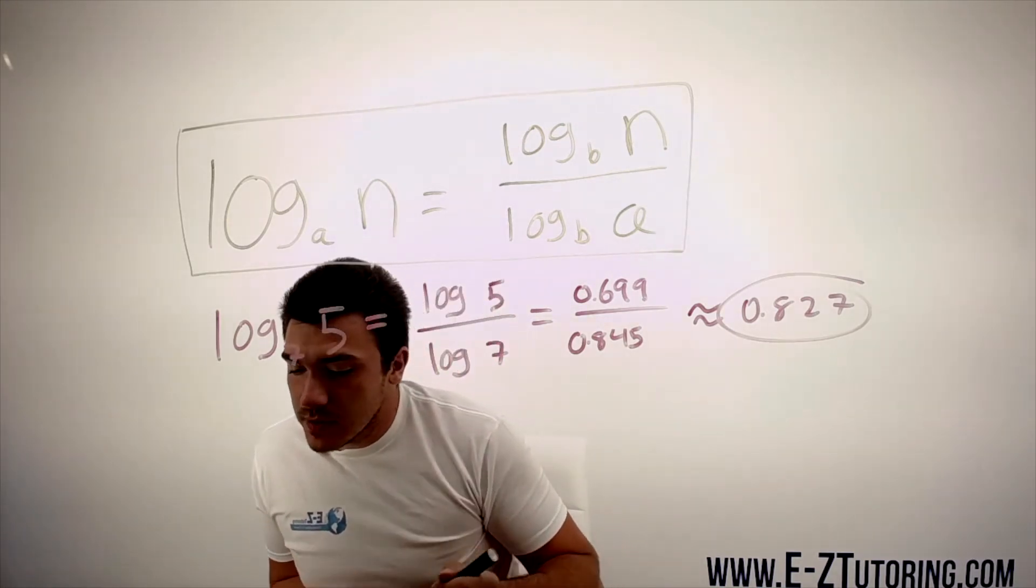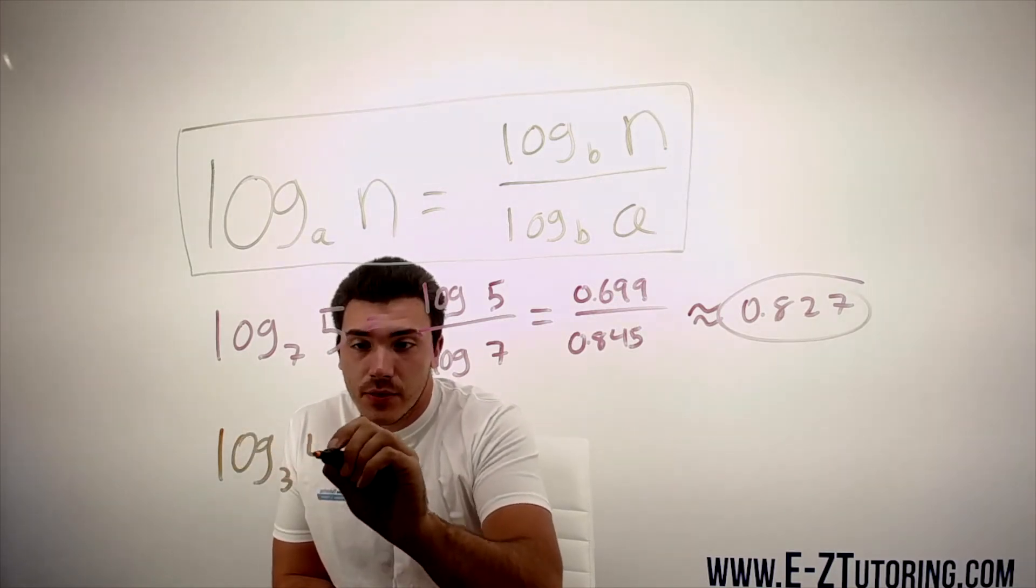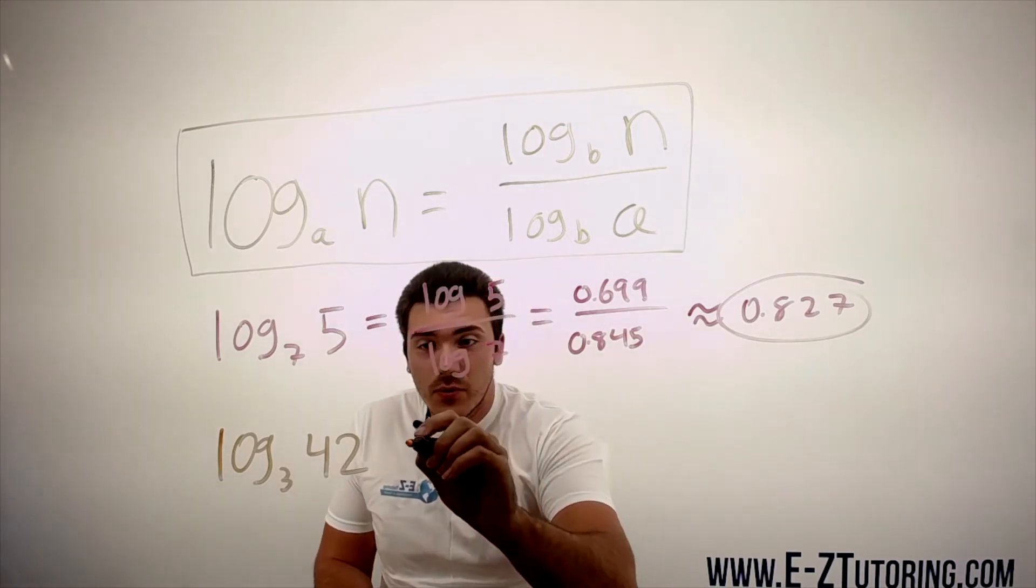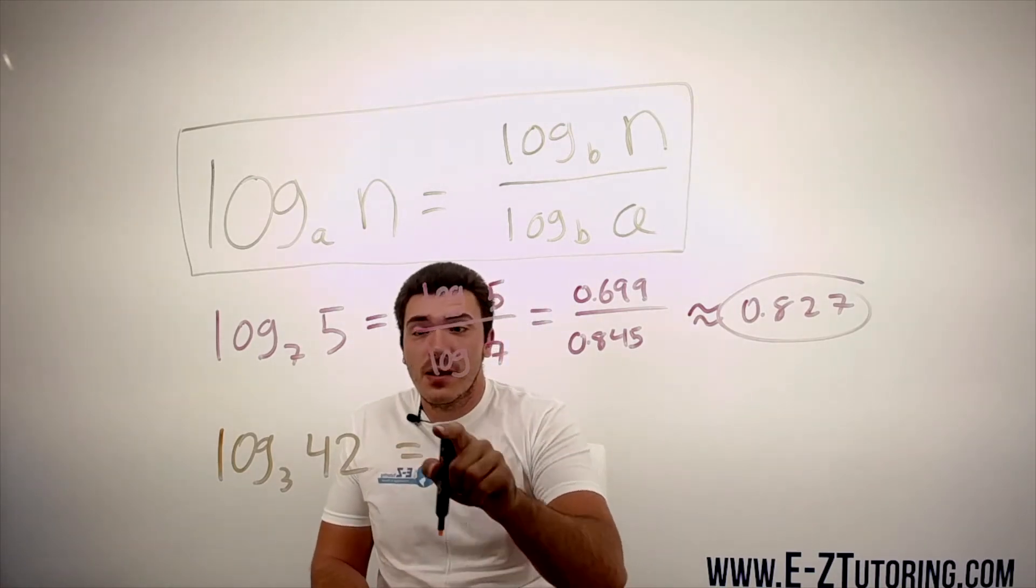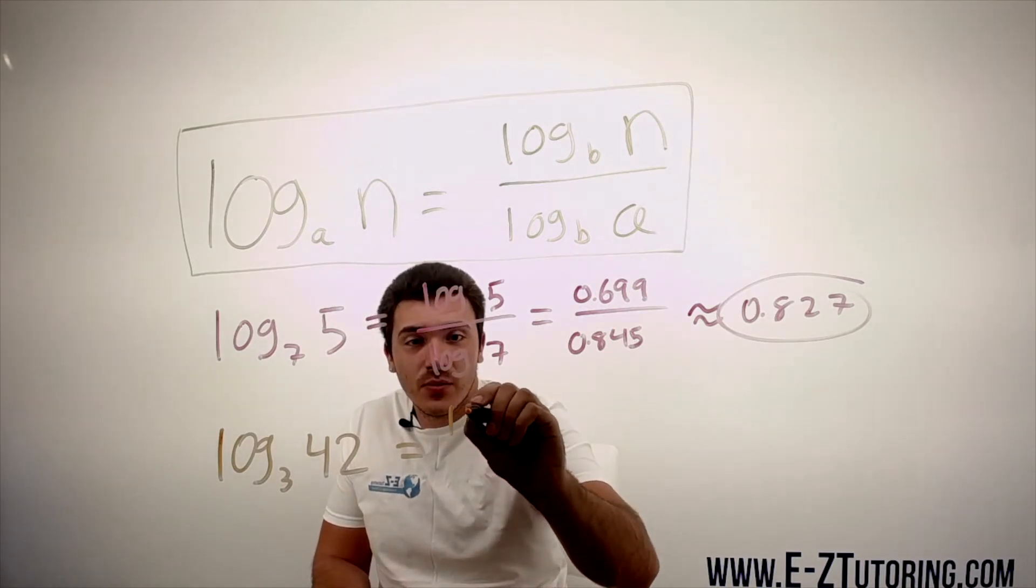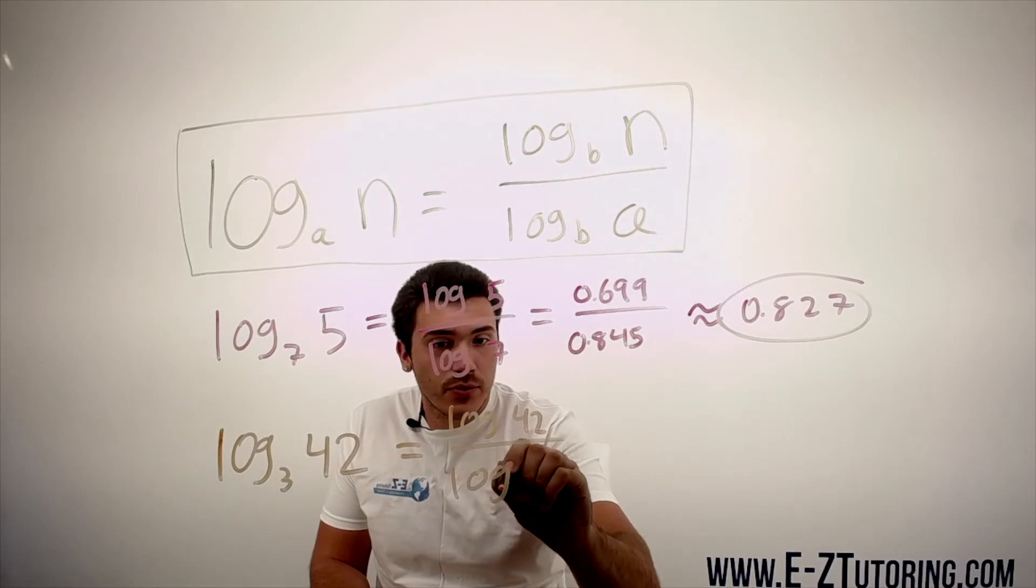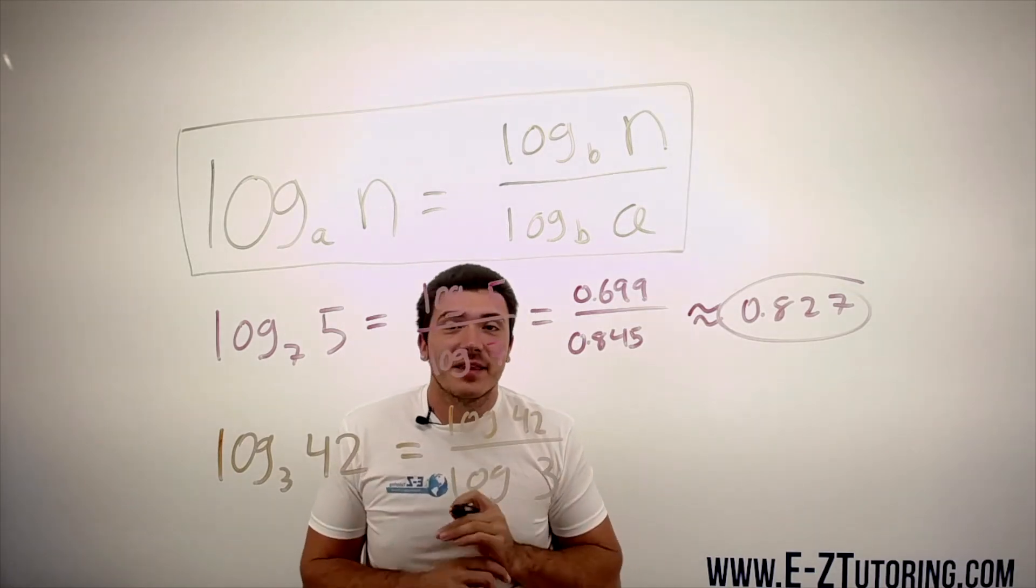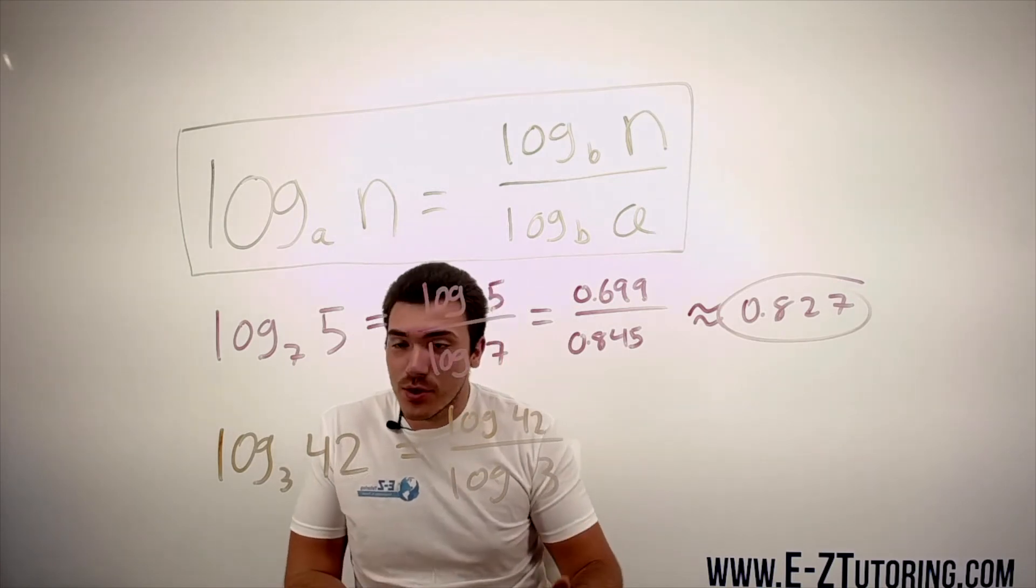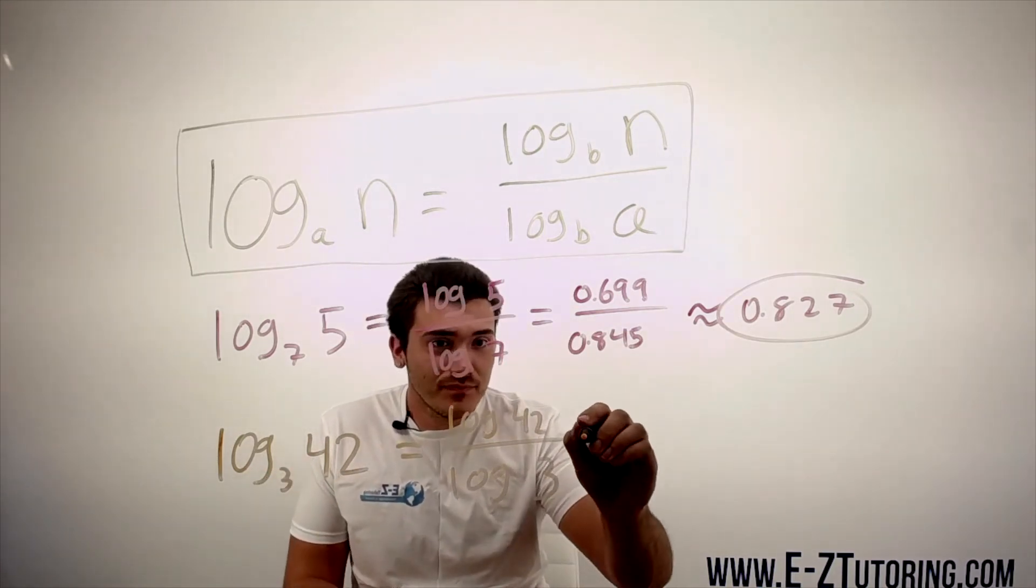Let's go ahead and do one more example here. Suppose we have log base 3 of 42. Once again, all we do is simply rewrite it with this number on top and this number on bottom. So we get log 42 over log 3, and it's that simple. As soon as you do this a couple times you start getting the hang of it. You just remember: log of this number divided by log of this number, and you find your answer.